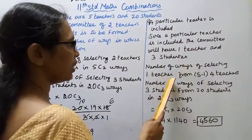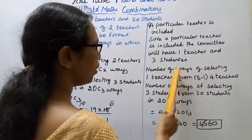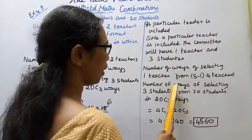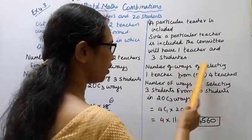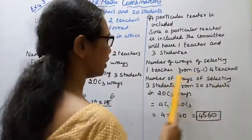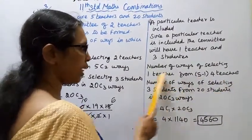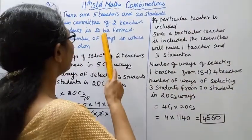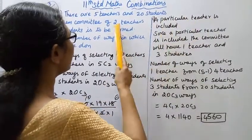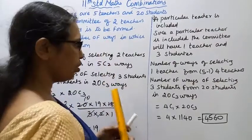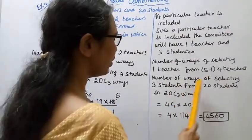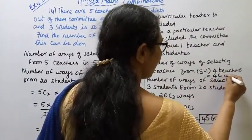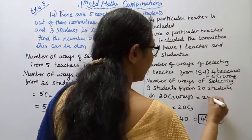Number of ways of selecting 1 teacher from the remaining 4 teachers — since one particular teacher is already fixed, we select from 5 minus 1 equals 4 teachers. Number of ways of selecting 3 students from 20 students is 20C3 ways. So it is 4C1 into 20C3.